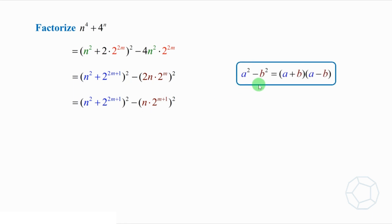Because a squared minus b squared equals a plus b times a minus b, therefore, we can factorize it as follows. Hey, the proof is completed. n to the power of 4 plus 4 to the power of n is written as a product of two integers. They are the factors, so it is not a prime number.